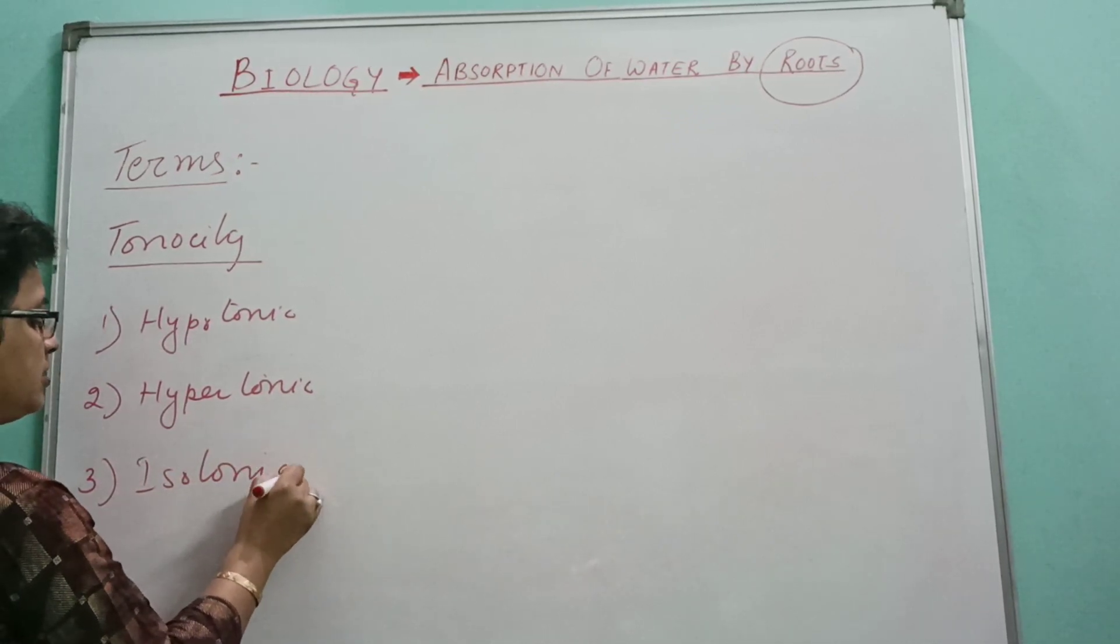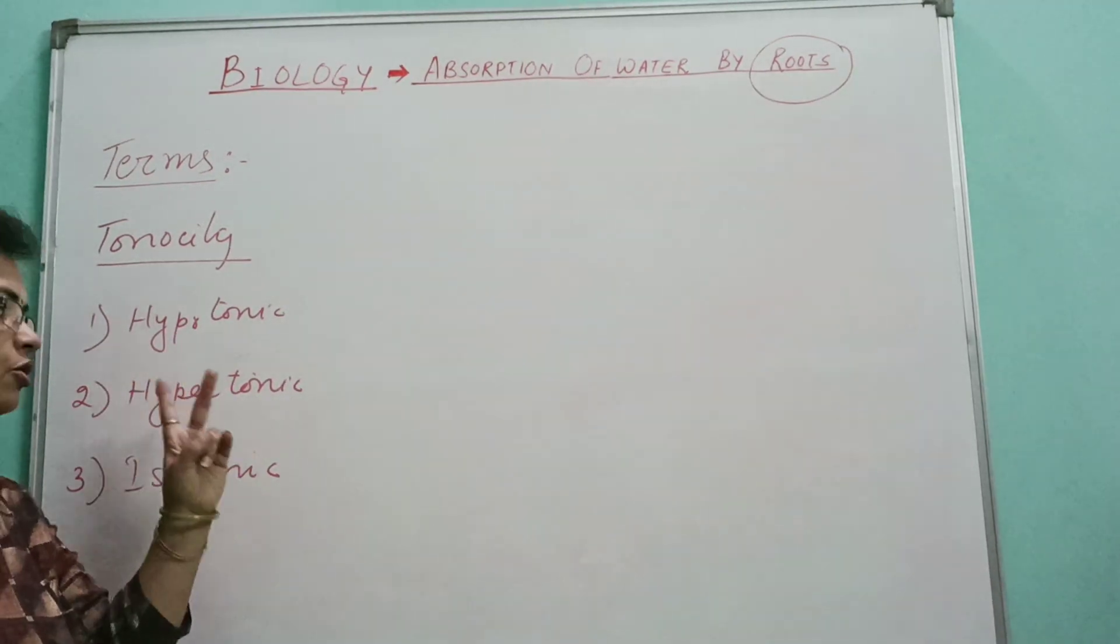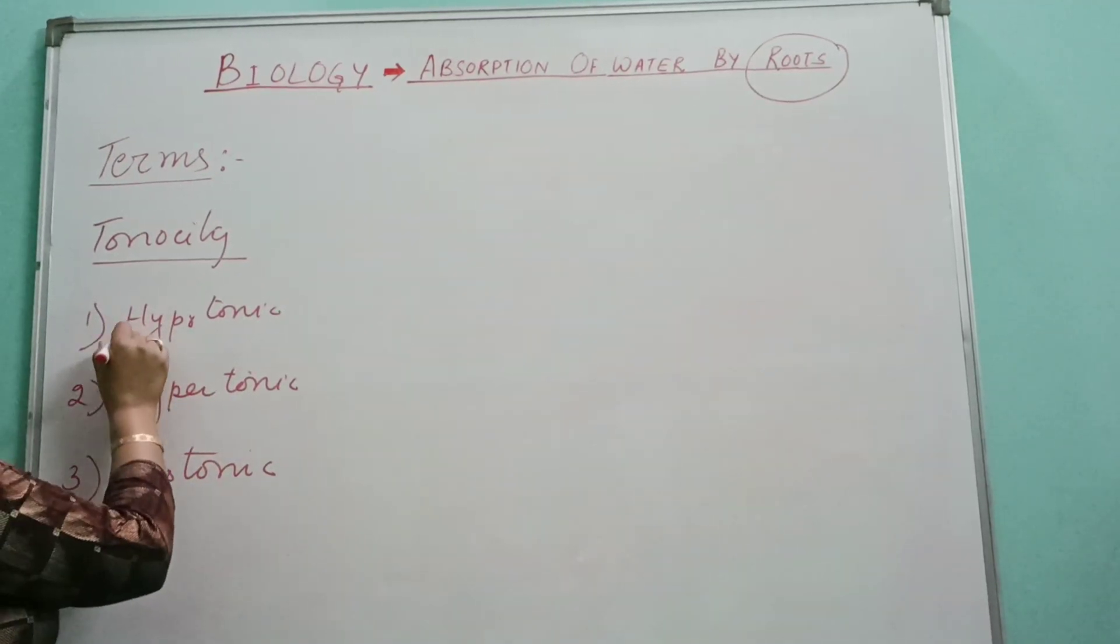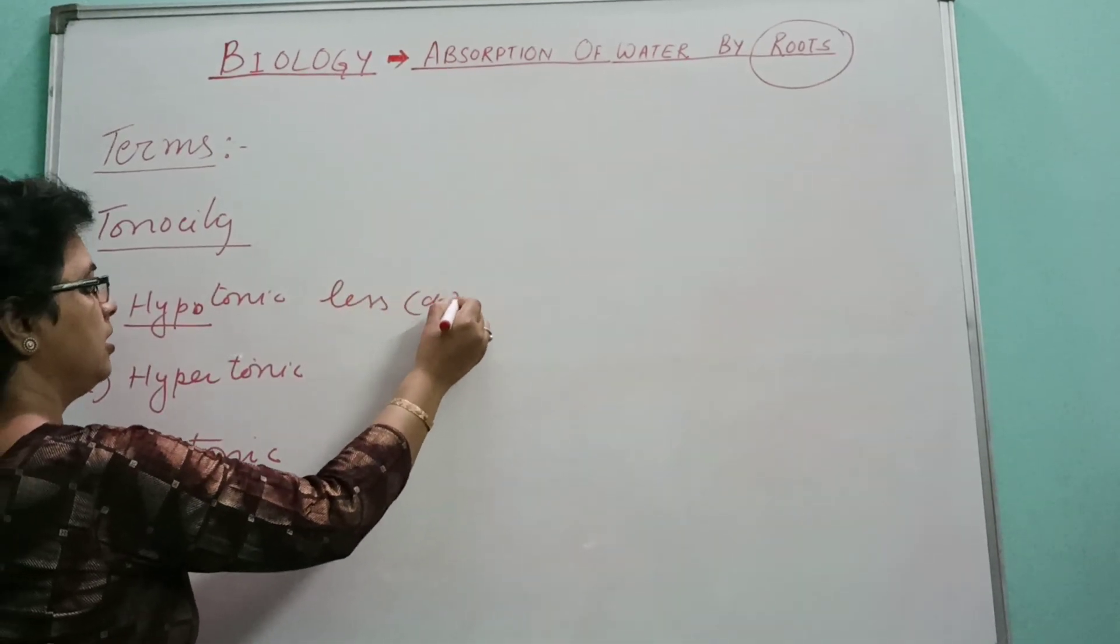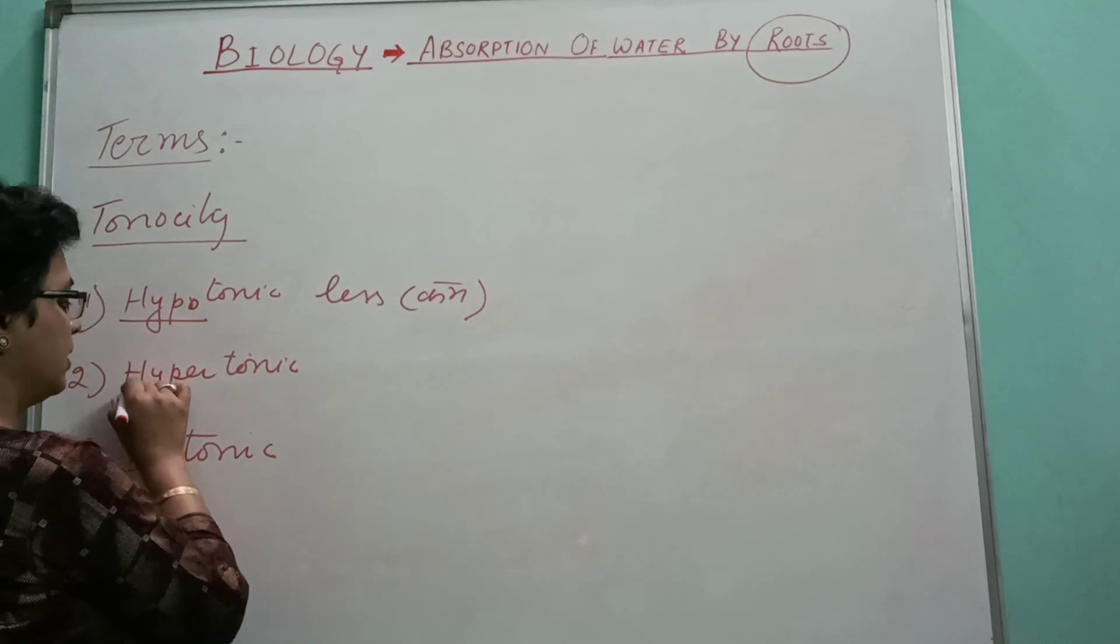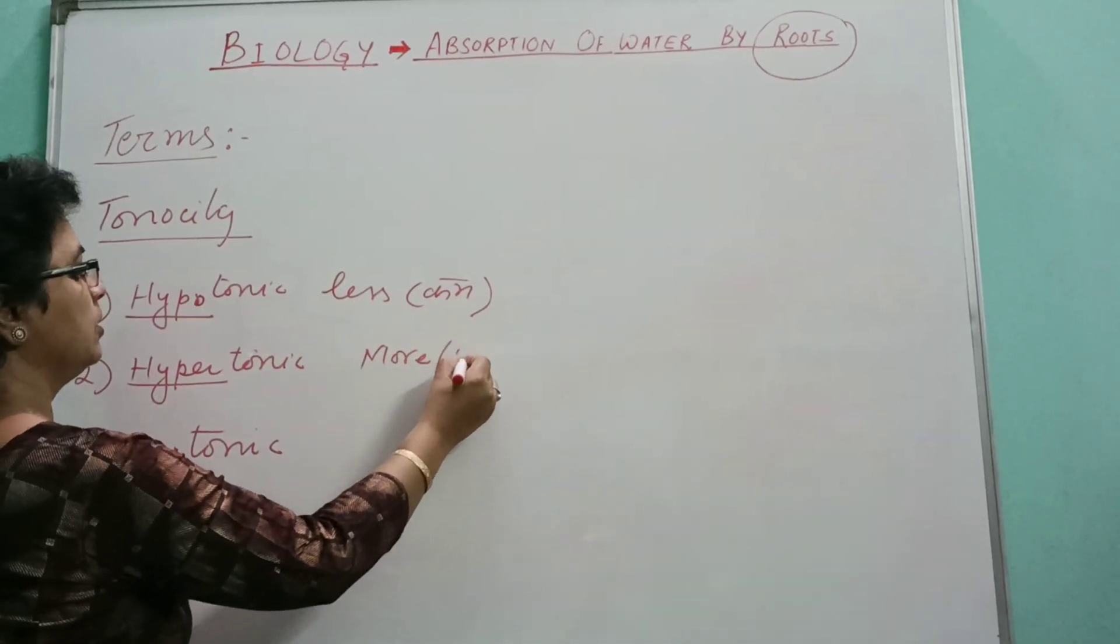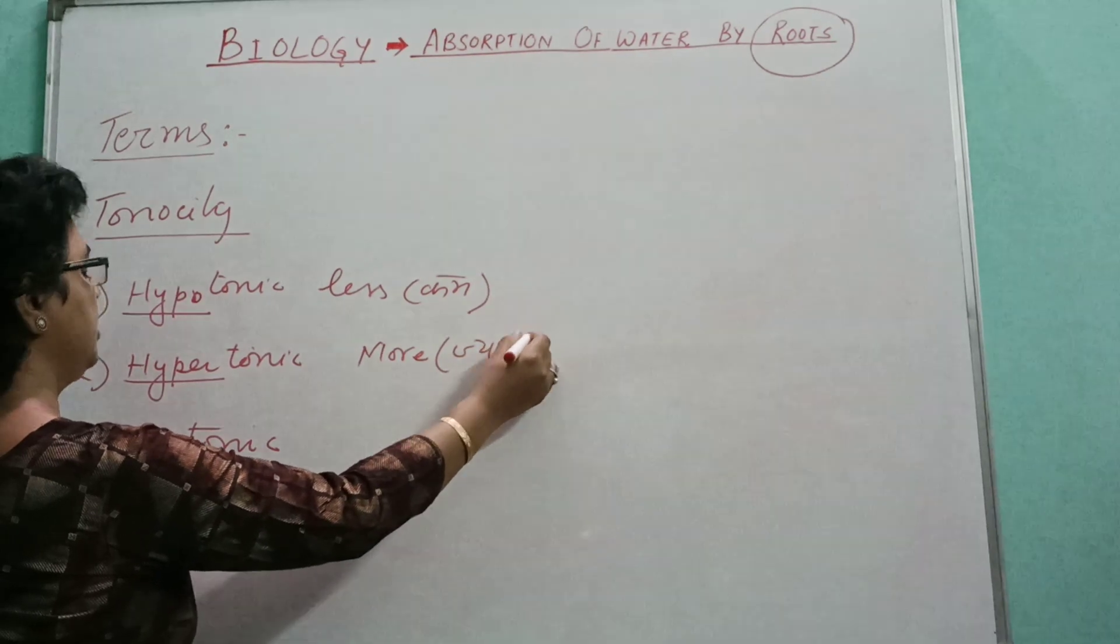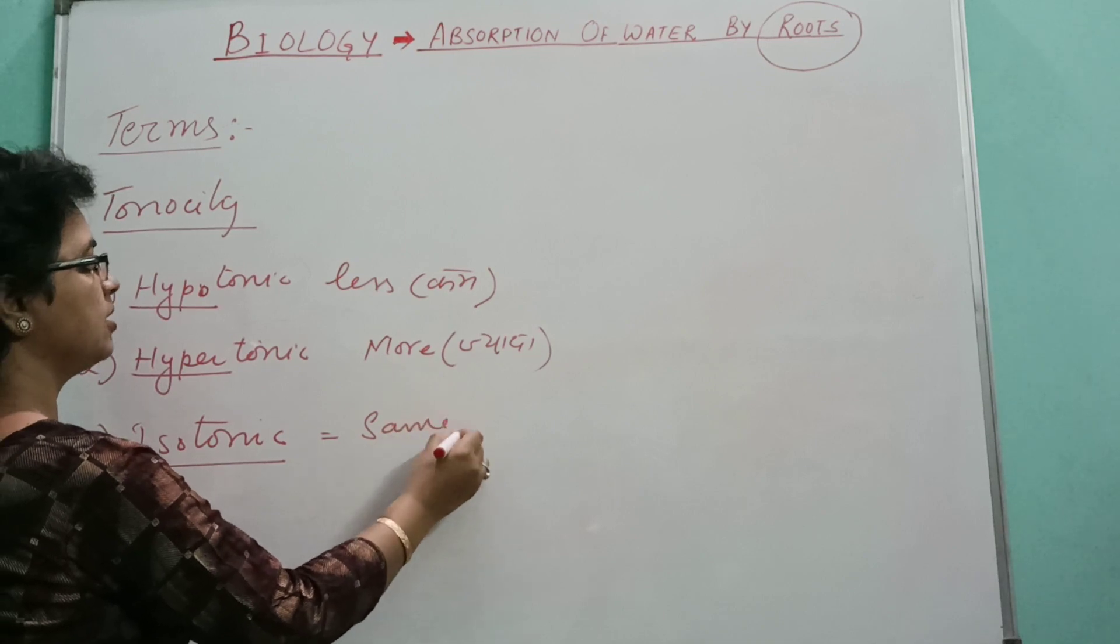These terminologies are used with comparison of two solutions. As we know, the meaning of hypo is less, in Hindi we can say kam. Hyper means more, jada. Iso means same, jaisa or saman.